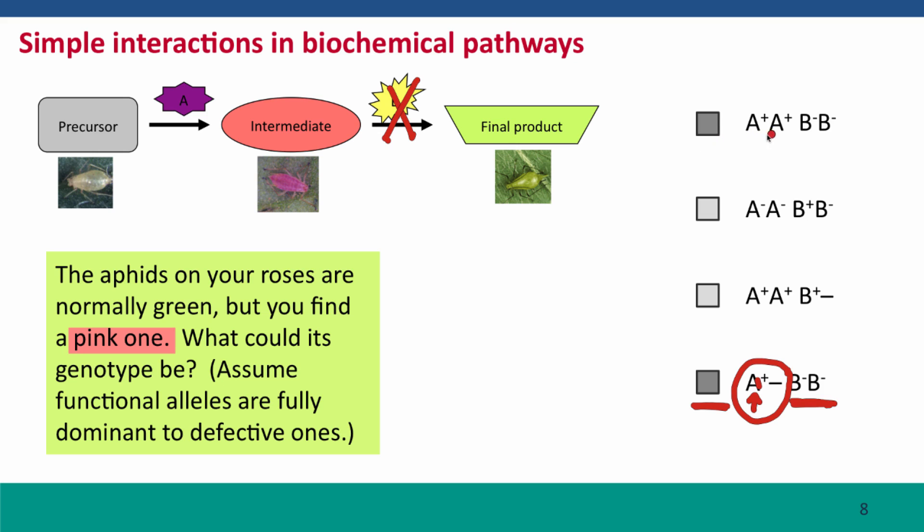Another correct answer is A plus, A plus, B minus, B minus. So this individual could have two functional alleles. This genotype is actually included in this genotype, but they both are correct answers given the way the question is worded.